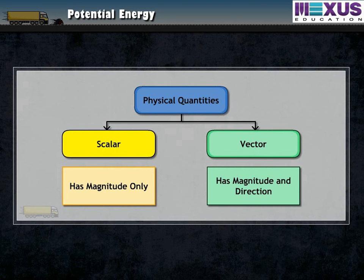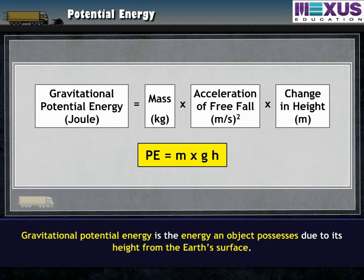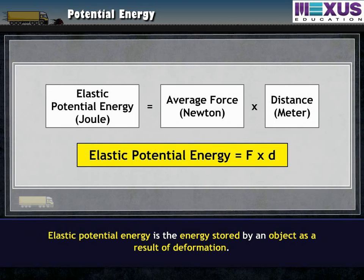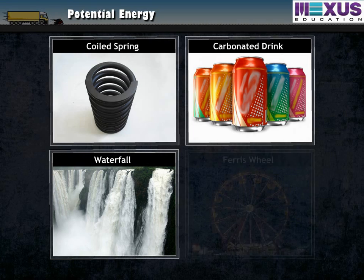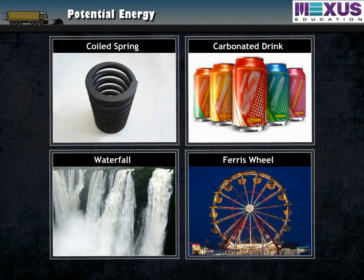Potential energy is also a scalar quantity. It is of two types. Gravitational potential energy is the energy an object possesses due to its height from the earth's surface. Elastic potential energy is the energy stored by an object as a result of deformation. A coiled spring, an unopened carbonated drink, water at the top of a waterfall, and a Ferris wheel before it starts moving are all examples of potential energy.